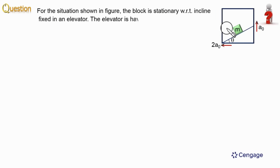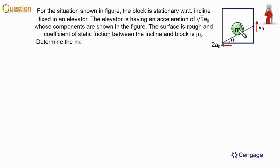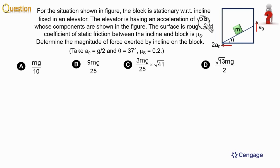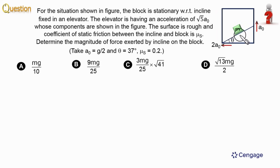In this question, you can follow this figure. This figure consists of an elevator, and in this elevator there is an inclined plane. On this inclined plane we have a block of mass small m which is stationary with respect to the incline. This elevator is moving with acceleration root 5 a-naught, with components a-naught in the upward direction and 2 a-naught in the leftward horizontal direction. The surface is rough, and the coefficient of friction between the incline and block is given as μs. We are given a-naught = g/2, θ = 37°, and μs = 0.2.